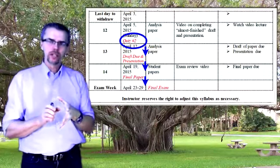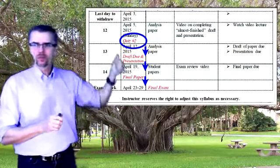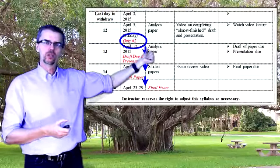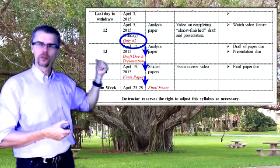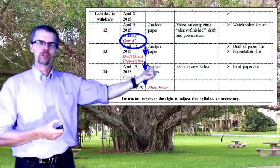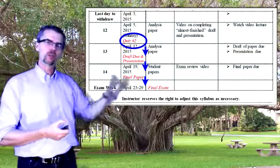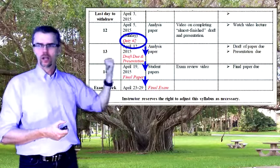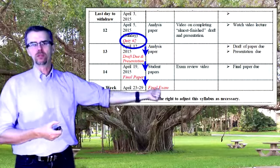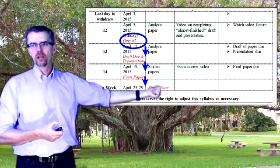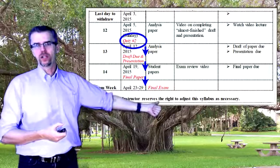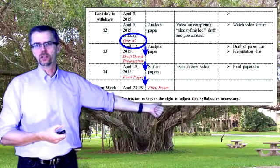So what's happening in those last three weeks? On April 5th, quiz number two is due. On April 12th, the draft of your paper and your presentation are due. On April 19th, your final paper is due. And then April 23rd to 29th, you have to write the final exam — so there are four major events in four weeks.